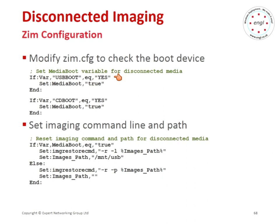We can have one common ZIM script for both the Pixie environment and the disconnected environment. We need to know when this is a disconnected build: the Zenworks Linux environment automatically sets a variable of either USB_boot or CD_boot if you boot from those media. If those are set, we set a variable called media_boot to true. When we look at our actual restore commands, if media_boot is true, we change how we run IMG to use restore and local, and change the imaging path to the USB device. If we don't boot from media, we use our standard restore from proxy.